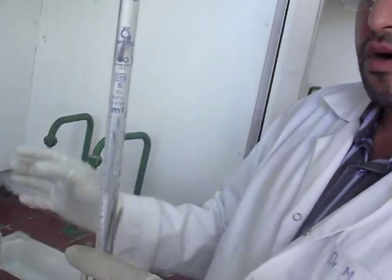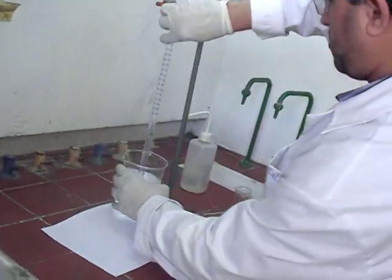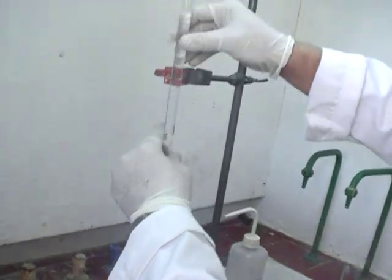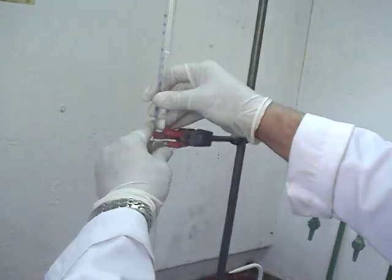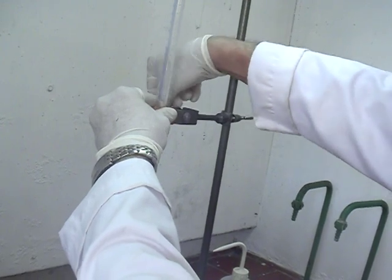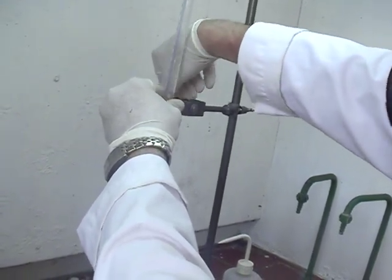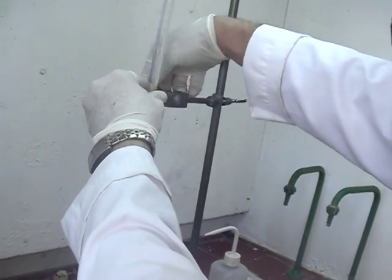Using your burette holder, adjust it at around two centimeters above the beaker level.